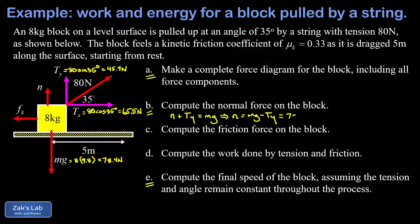Now we can submit our numbers. We have 78.4 newtons for mg, we have 45.9 newtons for Ty, and we end up with 32.5 newtons for the normal force.